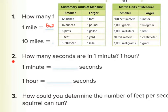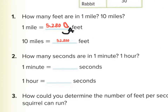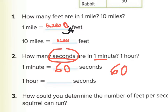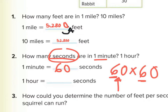Now we're being asked about time: how many seconds are in one minute and in one hour? One minute has 60 seconds. For one hour, there are 60 minutes, so we multiply 60 seconds by 60 minutes. That's the same as 6 times 6 which gives 36, then add the two zeros — so 3,600 seconds in one hour.